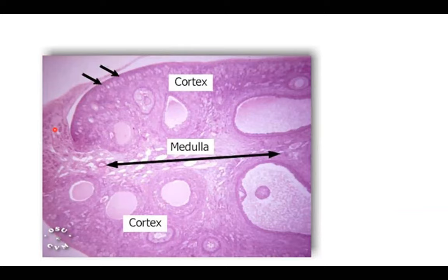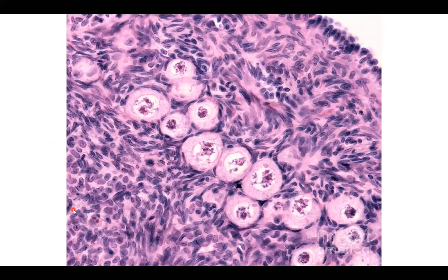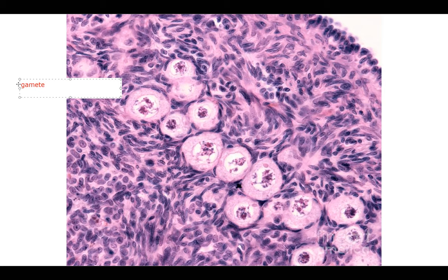Here we have an ovary. We can see the outer cortex and the inner medulla where we have the blood vessels and the nerves, and then the cortex where we have the follicles. As we mentioned, the anatomy of the follicles are hopefully distinctly different. The other thing you have to remember is there is a difference between the cell, the gamete, and the follicle.